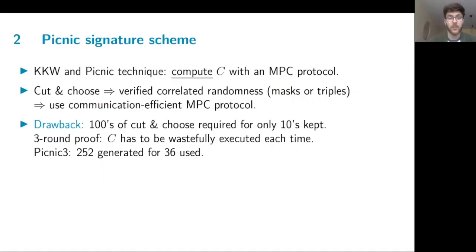The drawback is that hundreds of cut-and-choose triples have to be generated for only a few tens to be kept. Not only this, but if you want to compress the proof to three rounds, then the circuit has to be executed for each of the hundreds of cut-and-choose. And all of these executions have to be discarded when only tens are kept. So to give an idea, in PICNIC you have to generate 252 copies of the circuit, when only 36 will actually be challenged by the verifier.